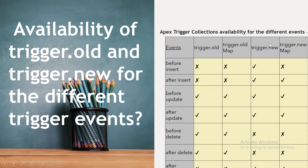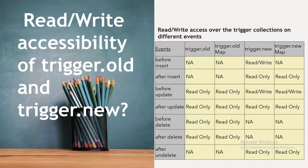For before update: trigger.old, trigger.oldMap, trigger.new, and trigger.newMap are all available. For after update: all four are also available. For before delete: trigger.old and trigger.oldMap are available. For after delete: trigger.old and trigger.oldMap are available. Regarding read/write access — trigger.new is read/write in before insert and before update, but read-only in after insert and after update. trigger.old is always read-only. It is not applicable for delete events.